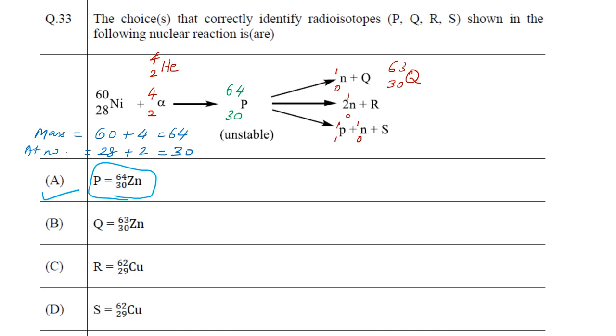When we see for R, it is 2 neutrons, so 2 quantity must be removed from the mass number. The mass number of R must be 62, and of course the neutrons carry no charge, so the atomic number will remain at 30.